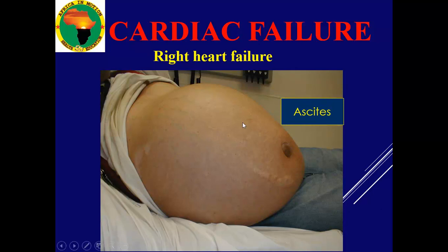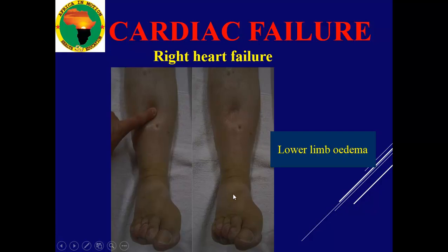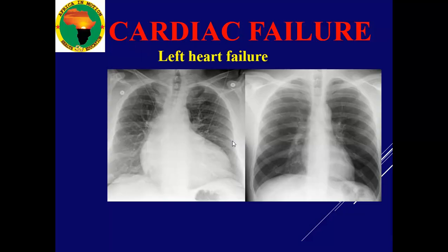Ascites — water in the abdomen — is visible. The liver swells and enlarges, which we call hepatomegaly. Lower limb edema develops because water leaks through the vessels into the tissues, causing the limbs to swell. On chest X-ray, you can compare a normal-sized heart with a failing heart that is significantly enlarged, almost touching the borders of the chest — a clear sign of heart failure.